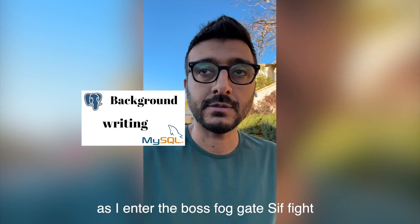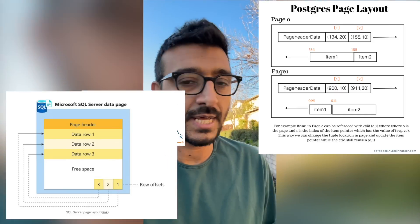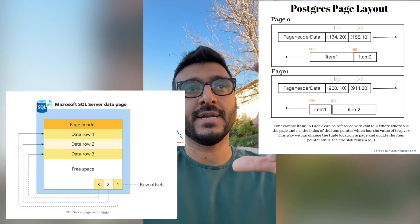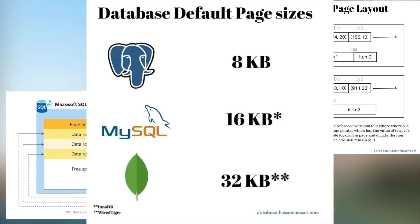I want to talk about background writing for a minute. In database engineering, to build a database we have the concept of documents, tables, or graphs, but internally we store these as pages. Almost all database systems use the concept of pages, which is a fixed-size binary area — 8 kilobytes, 16 kilobytes, 32 kilobytes — and we store the data we want in these pages as binary bytes.